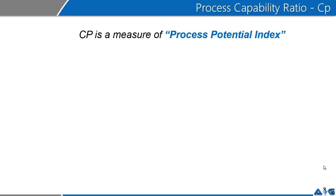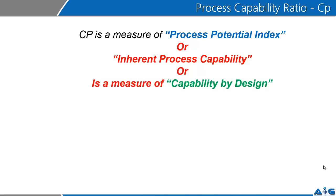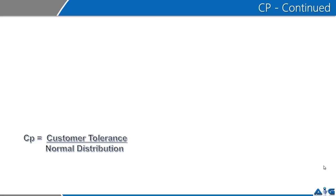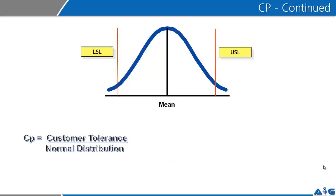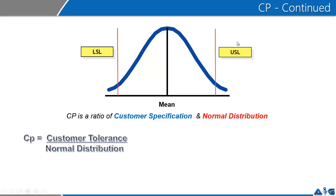CP is essentially a measure of the process potential index, also referred to as the inherent process capability, or what is referred to by certain scholars as the capability of your process by design. CP is essentially a ratio of customer tolerance and normal distribution — specifically, the USL minus the LSL divided by six times the standard deviation.